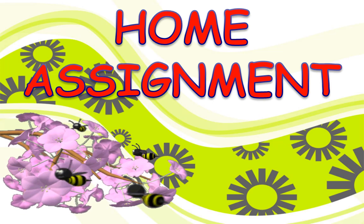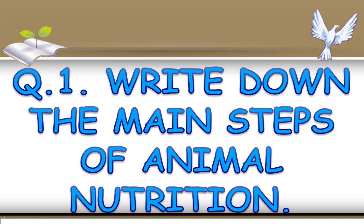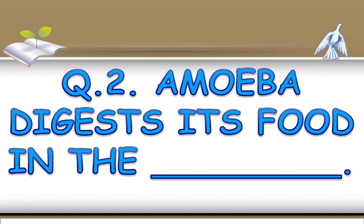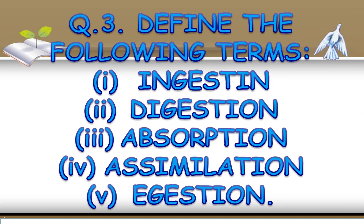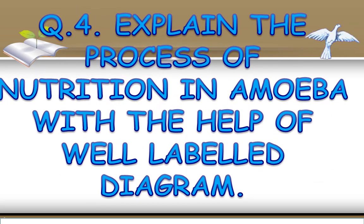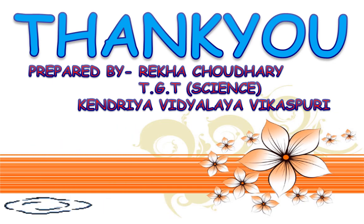It's time to note down your home assignment. The questions are: Part 2 — Digestion, Part 3 — Absorption, Part 4 — Assimilation, Part 5 — Egestion. Question Number 4: Explain the process of nutrition in Amoeba with the help of a well-labeled diagram. Thank you and have a nice day.